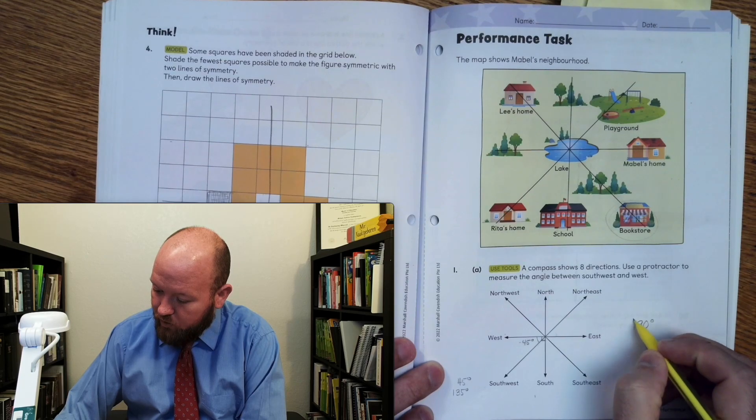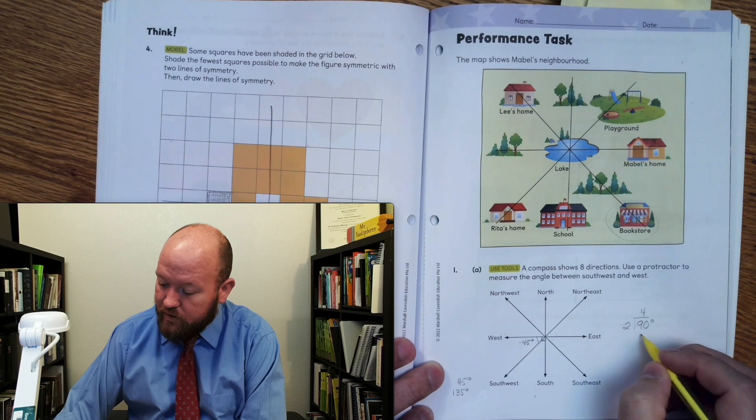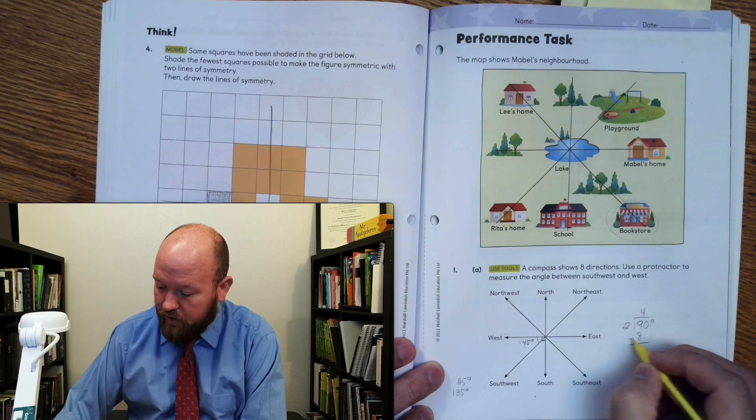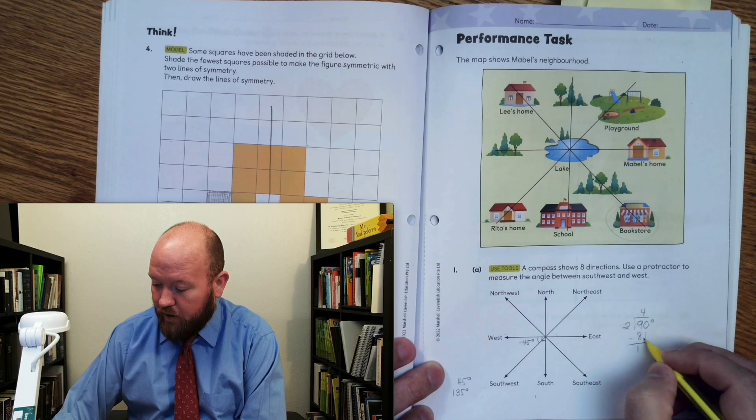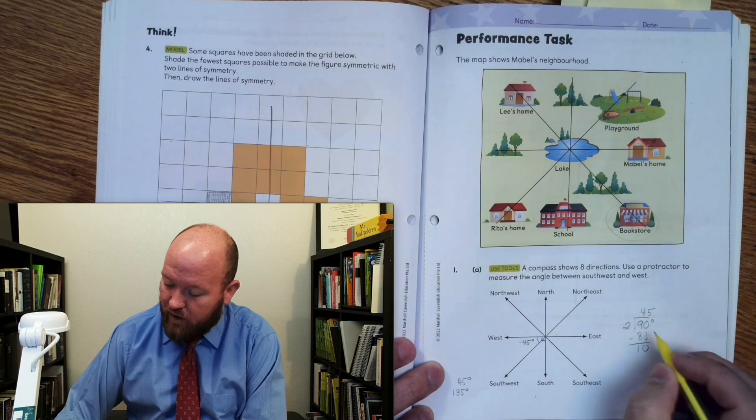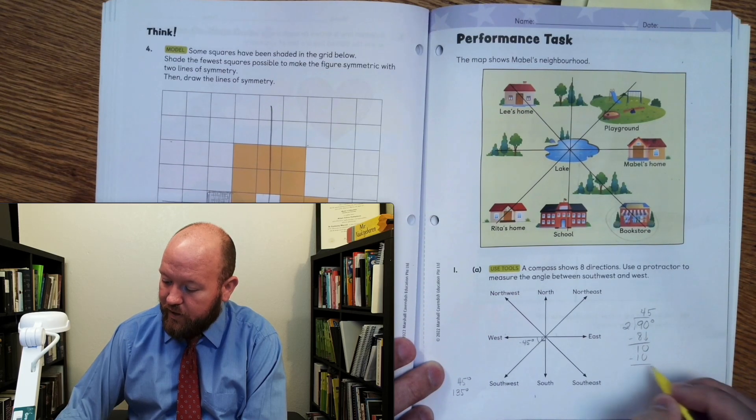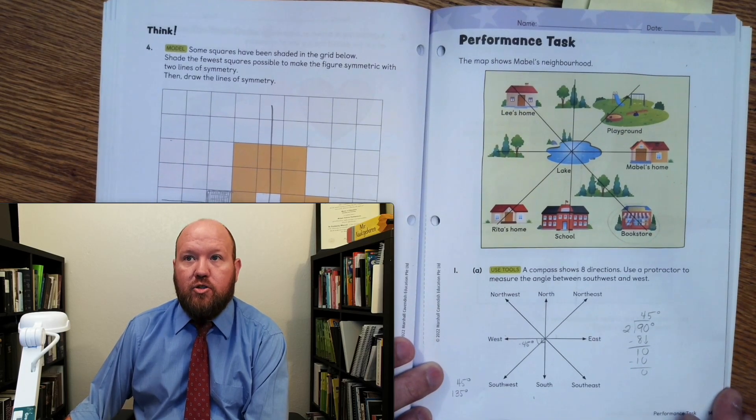So all I had to do was divide that by 2. 2 goes into 9 four times. 4 times 2 is 8. 9 minus 8 is 1. What do I do next? Bring down the 0. 2 goes into 10 five times. 5 times 2 is 10, and 10 minus 10 is 0. And so that's another way I could have found it without having to use my protractor.